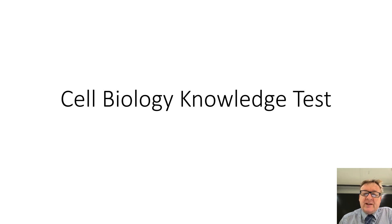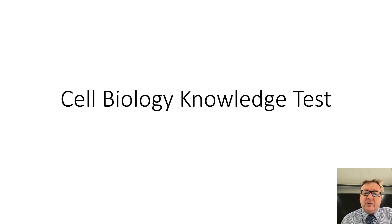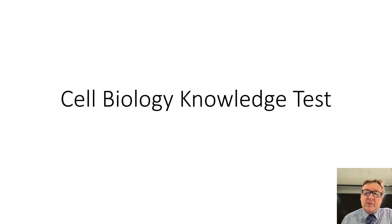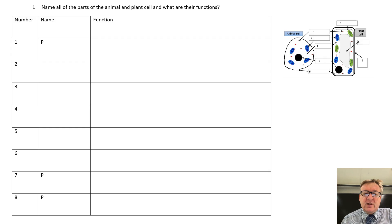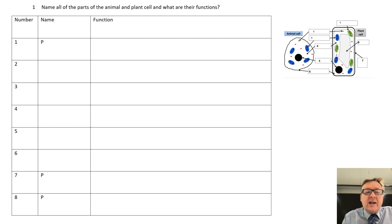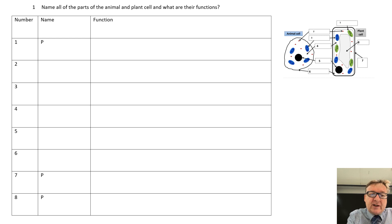Hi, this is the cell biology knowledge test. All the information, or the main parts of the information that you'll need for the GCSE cell biology unit. Now this is: name all the parts of the animal and plant cells and what are their functions.